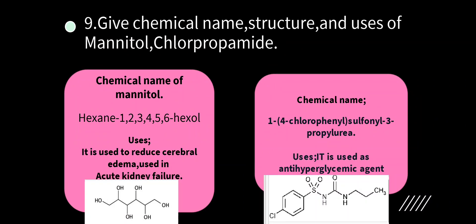Give the chemical name, structure and uses of mannitol and chlorpropamide. Mannitol chemical name: hexane-1,2,3,4,5,6-hexol. Uses: it is used to reduce cerebral edema (swelling) and in acute kidney failure. Chlorpropamide chemical name: 1-(4-chlorophenylsulfonyl)-3-propylurea. It is used as an anti-hyperglycemic agent to decrease sugar levels.